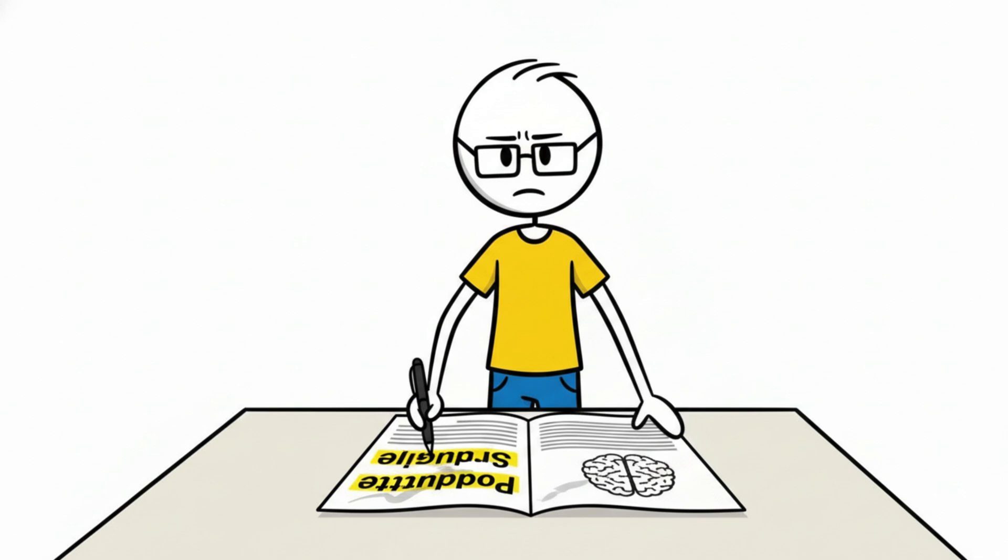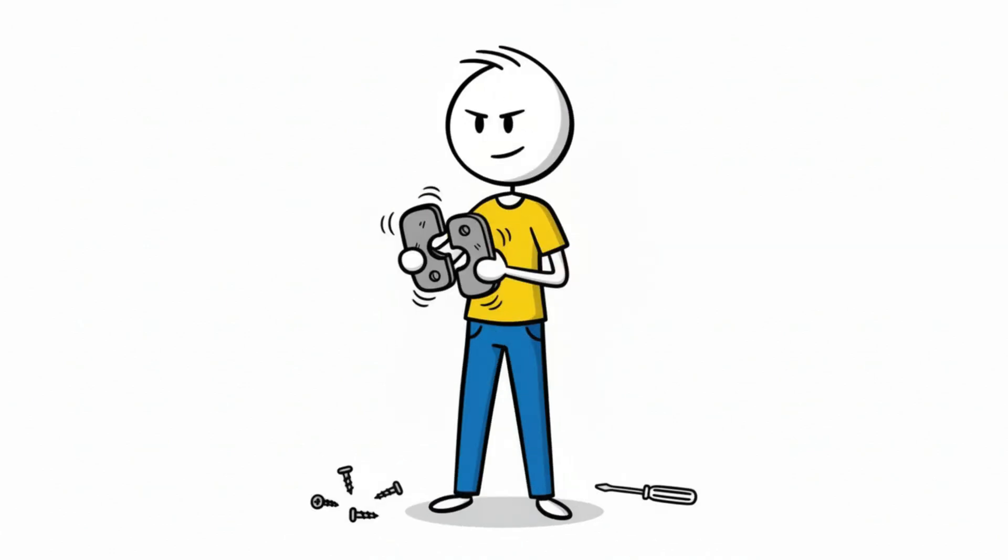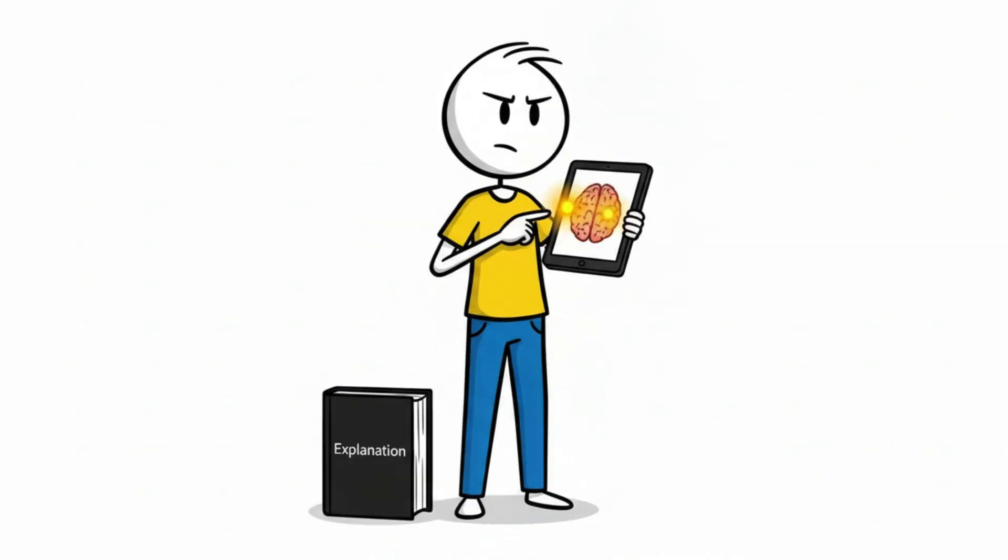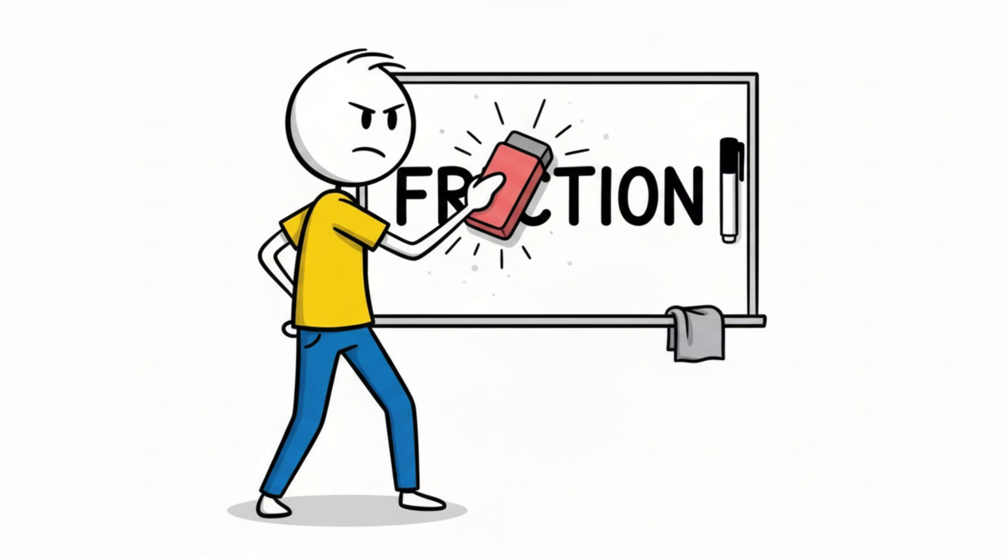This is what psychologists call productive struggle. The process where the brain tries, fails, adjusts, and retries, which forces deeper neural engagement than passive explanation. It's the opposite of what the modern world trains you to do. The modern world trains you to erase friction instantly.